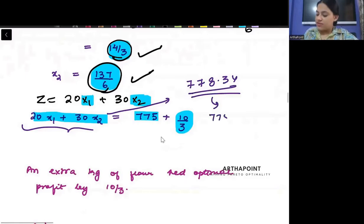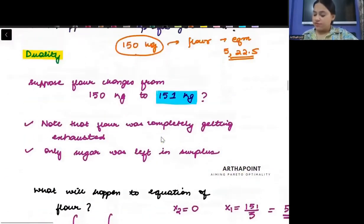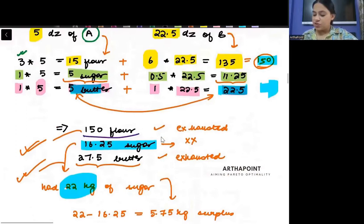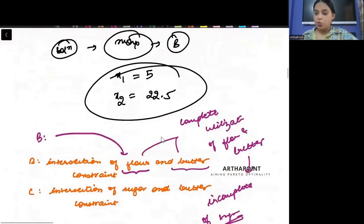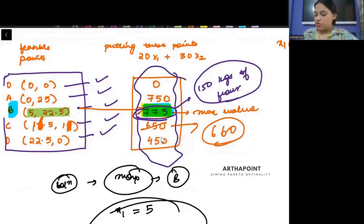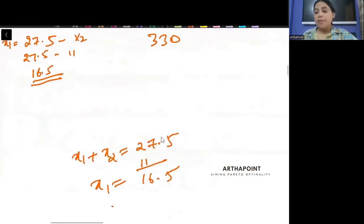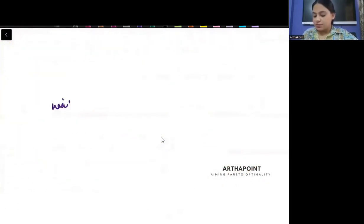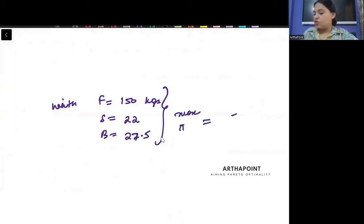I can just break this back and I can say this is 775 plus 3.34. 775 plus 10 by 3. Ab is ko bohat dhyan se hume interpret ka na hai. We need to interpret this very carefully. Note that earlier when I had 150 kgs of flour, the maximum revenue that I was generating was 775. The maximum value I can say that with flour as 150 kgs, sugar as 22 and butter as 27.5, the maximum profit you were generating was 775.